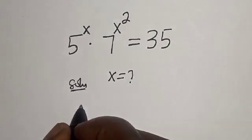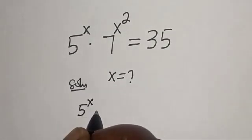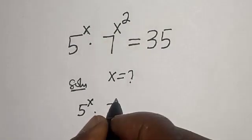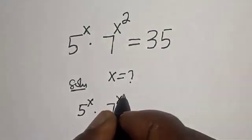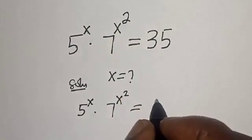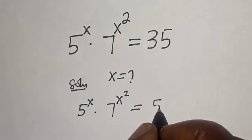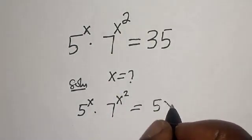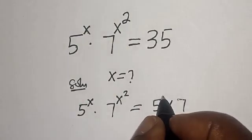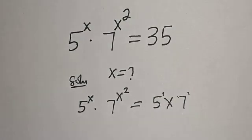We have 5 raised to the power of x multiplied by 7 raised to the power of x squared is equal to 35. Now, 35 can be written as 5 multiplied by 7, and remember, this is also raised to the power of 1 and raised to the power of 1.